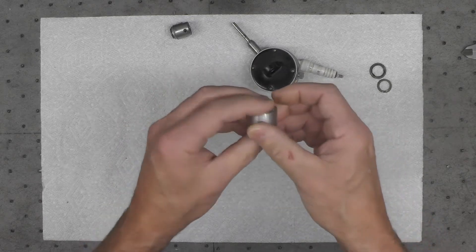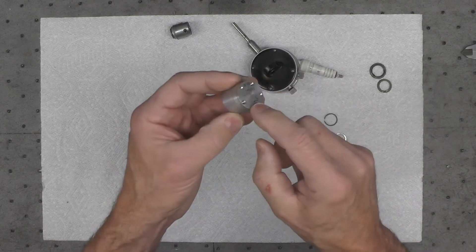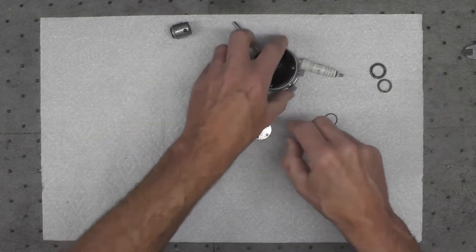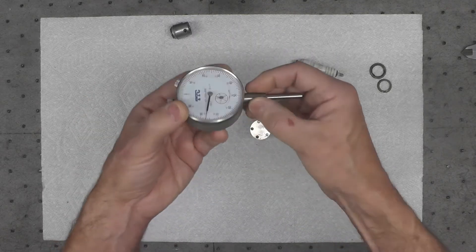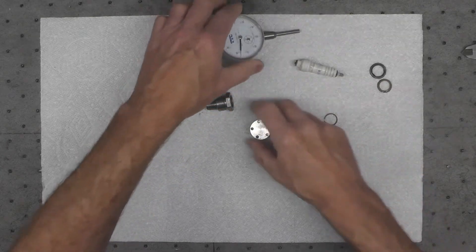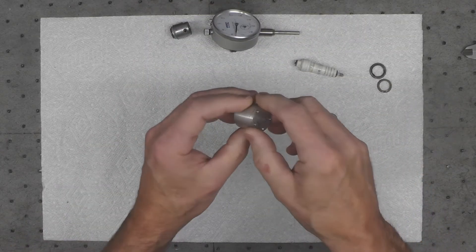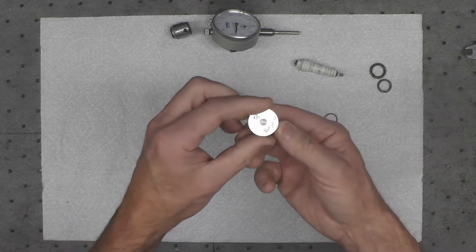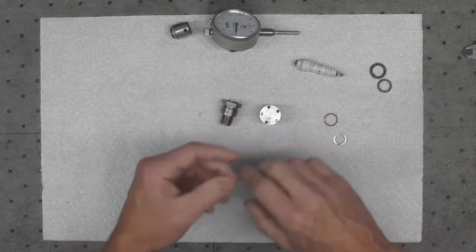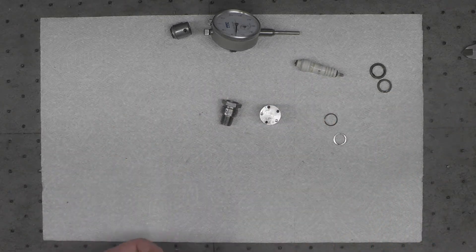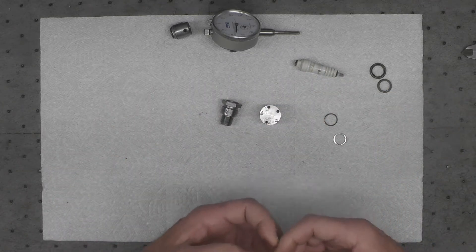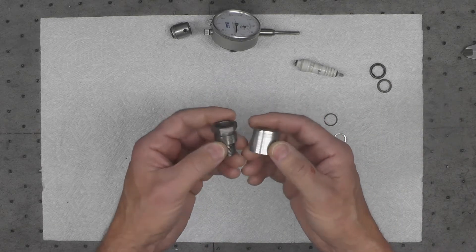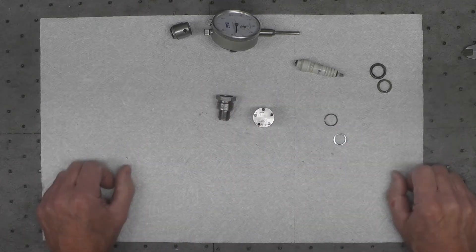I'm going to chuck this up in the lathe. First I'll drill the 3/8 center hole for the indicator and ream it, then I'll come back and bring the outside diameter down to that 600 thousandths dimension. I won't show everything, just bits and pieces to give you a flavor of what I'm doing.